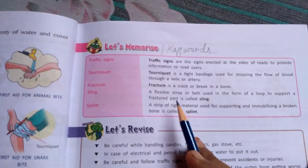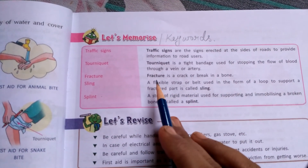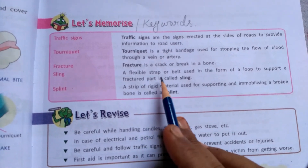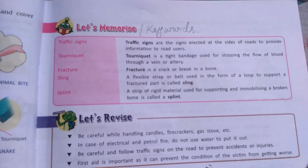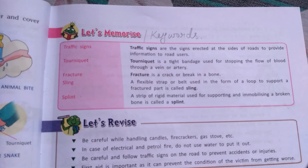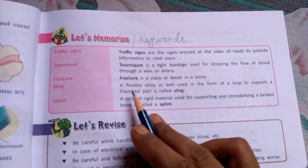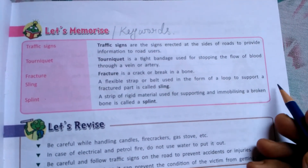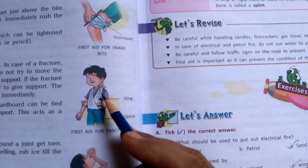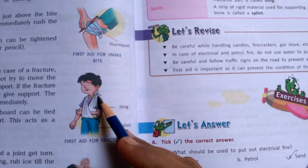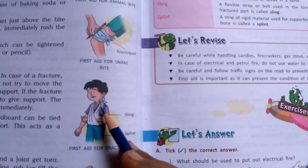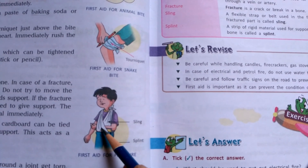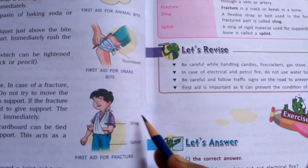Fracture — a crack or break in a bone. Sling — a flexible strap or belt used in the form of a loop to support a fractured part is called a sling. A strap can be made of cloth, leather, or any kind of fiber or fabric, and it is flexible, meaning it can be moved easily. As seen in the picture, the sling is tied around the neck in the form of a loop to give support to the fractured part.